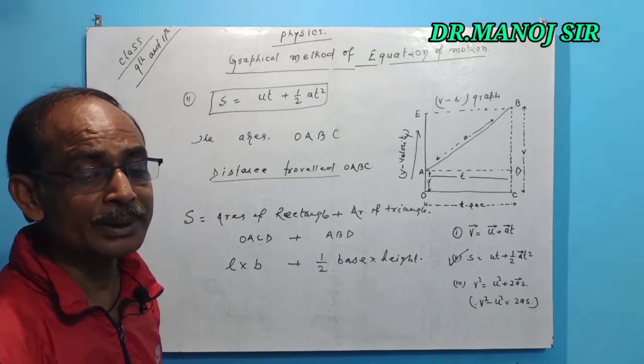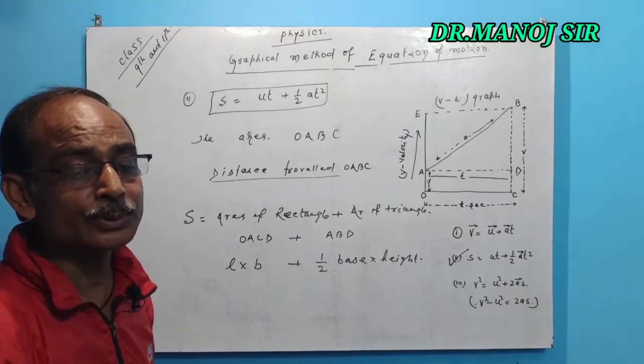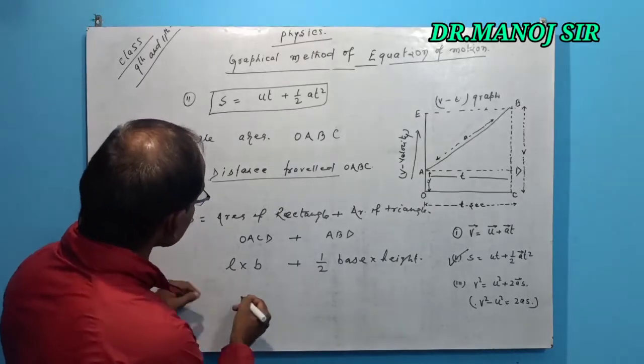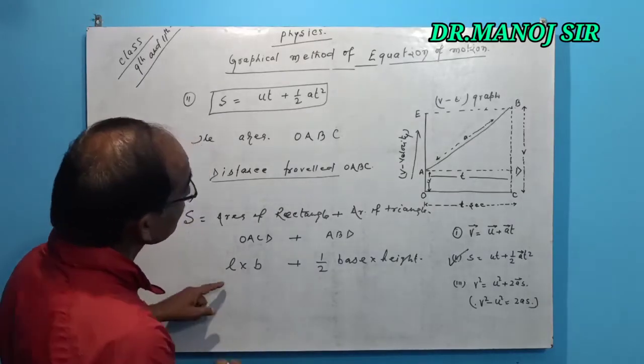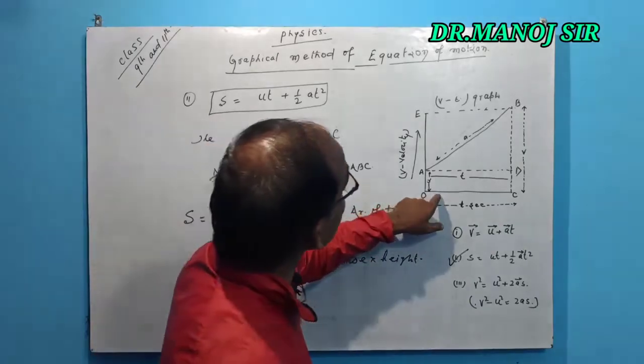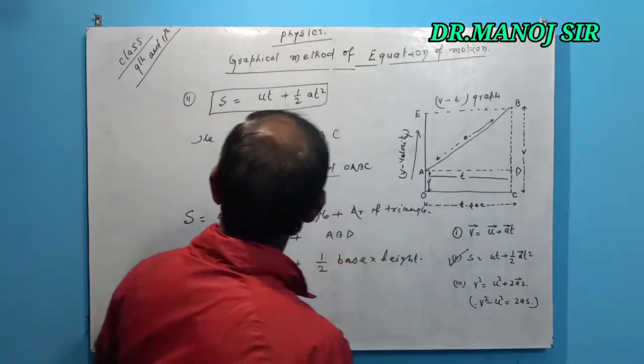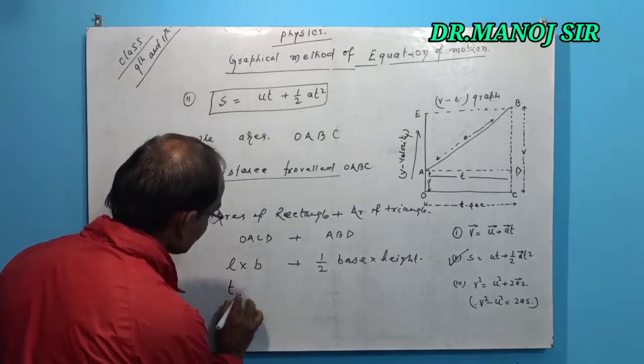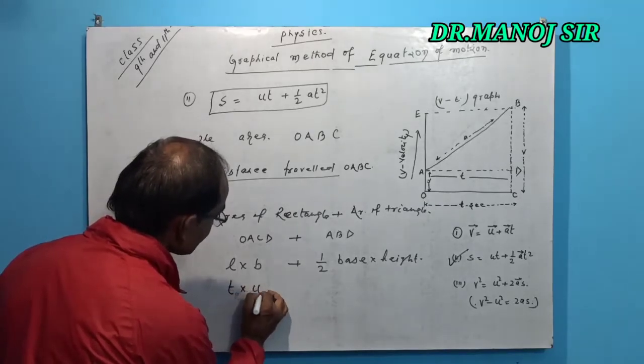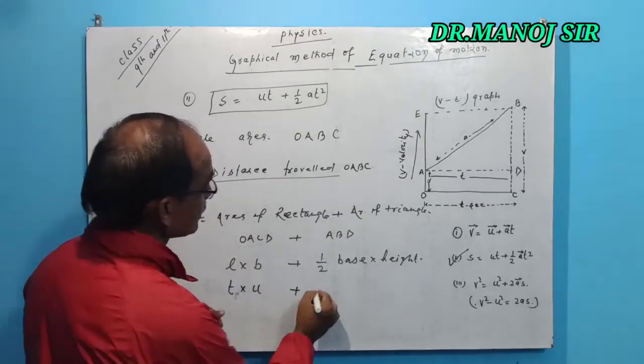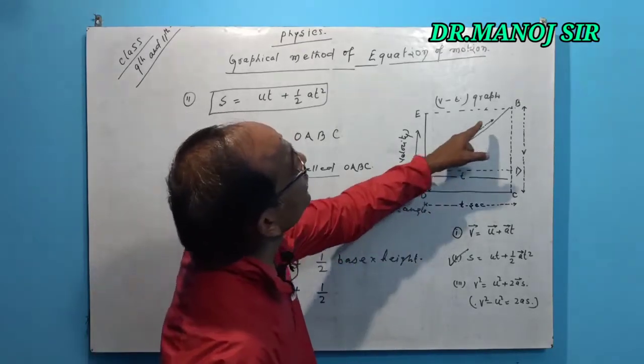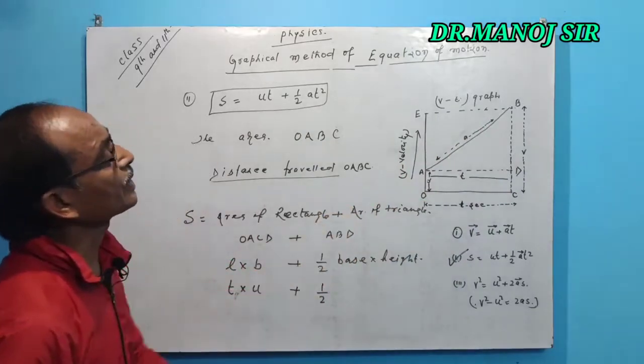Now, the length and the base, t into u, plus half triangle.